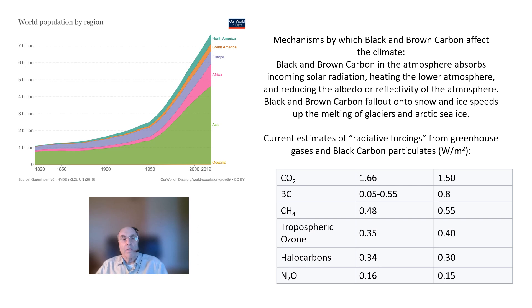The mechanisms by which black and brown carbon particles affect the climate are complex. The black and brown carbon particles in the atmosphere absorb incoming solar radiation. That can add directly to the amount of heat in the lower atmosphere. In addition, the particles reduce the reflectivity or the albedo of the atmosphere, both directly and indirectly, by making clouds less white.